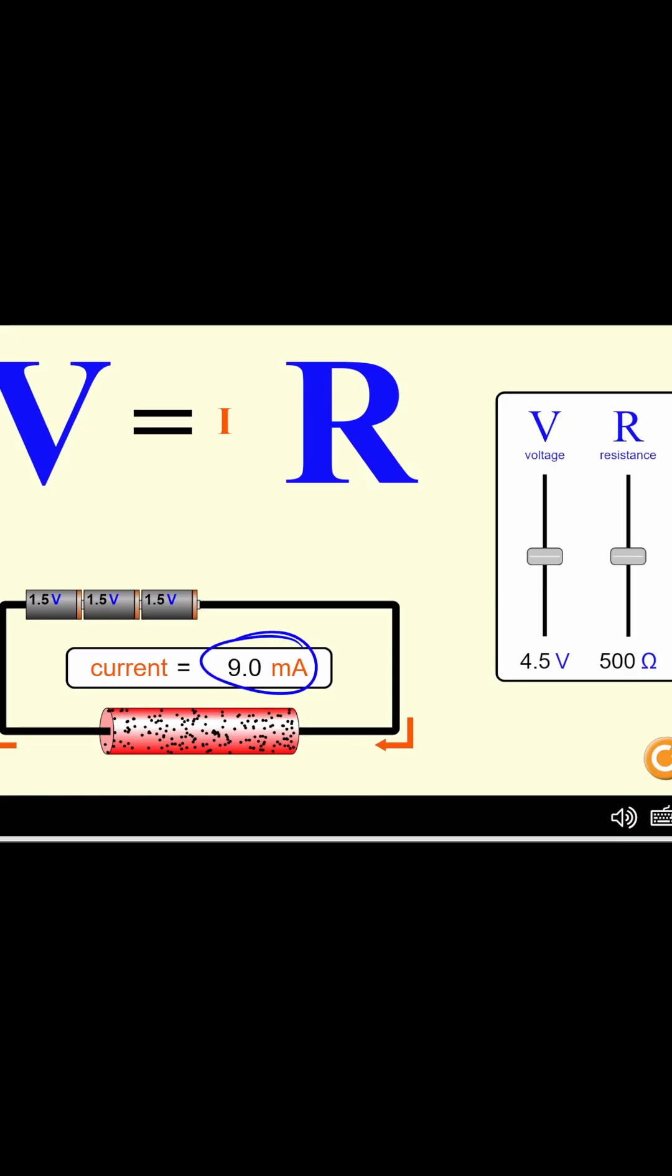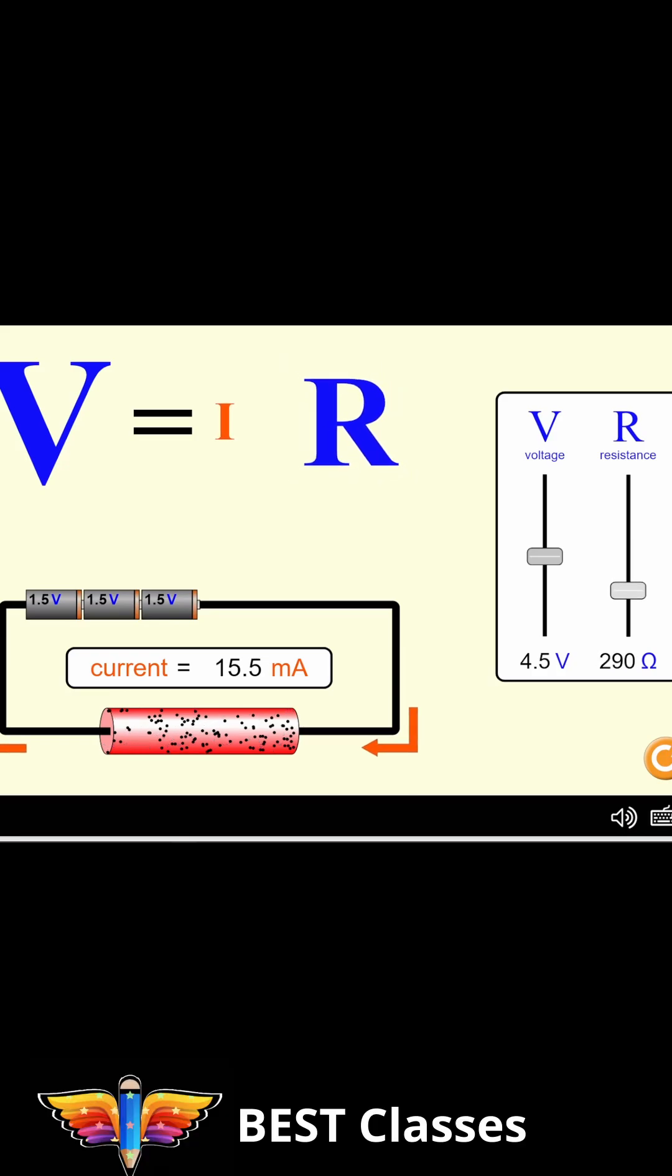Our current is 9 milliamperes. What will happen if I decrease the resistance? Let's decrease the resistance. Now our current is 25 milliamperes.